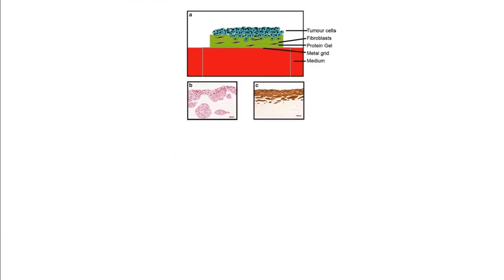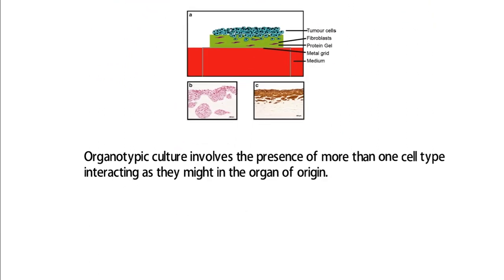Organotypic culture basically involves the combination of cells from different lineages in a determined ratio to create a component of an organ. The cells of different lineages interact with each other on the metal grid as they interact in an organ, and they create a component of an organ.